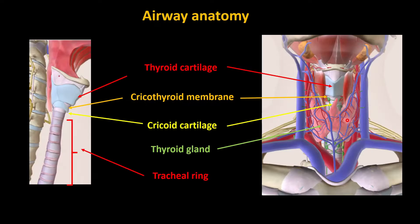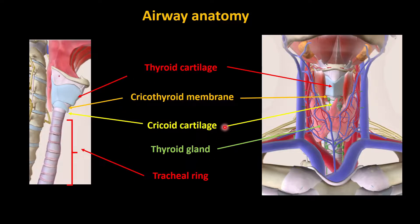We'll start with the ultrasound of the airway. Just a bit of anatomy: this is the thyroid cartilage, cricothyroid membrane, cricoid cartilage, the thyroid gland is here, and the tracheal rings. We're going to use ultrasound to identify all these important structures.